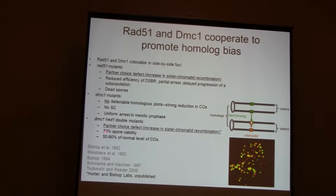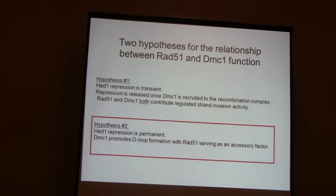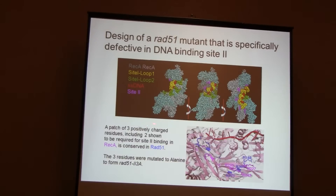From this we understand that these two proteins are somehow cooperating for the normal partner choice function. The results with Hed1 lead to two models. The model favored by the Roeder lab was that Hed1 repression is transient, providing time for DMC1 to join the complex, with Rad51 as the main driver of enzymology and DMC1 as a regulatory feature. The other hypothesis — which I favored for egotistical reasons having discovered DMC1 — is that Hed1 repression is permanent and DMC1 does all the enzymology, with Rad51 serving as an accessory factor. I'm happy to say we've proven the second model.